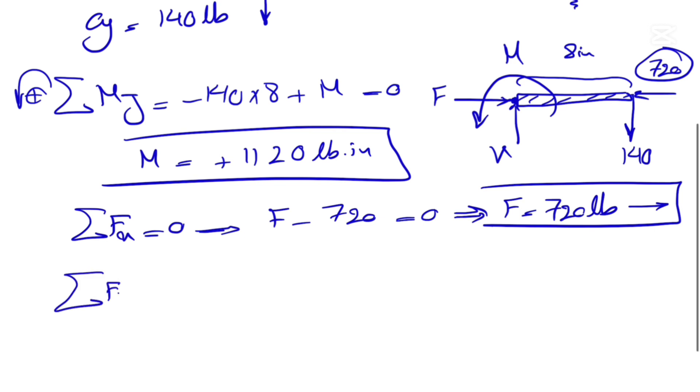And the last one is the sum of all forces in Y direction equals zero, which means V minus 140 equals zero. So our V is 140 pounds, no negative sign, the direction was correct for V.